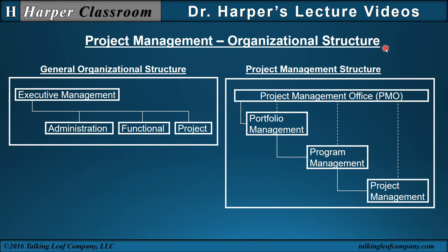The project management organizational structure is important to know how effective a project can be and how to conduct projects. The general organizational structure has executive management, administration, functional areas or line managers, and then projects. In the project management structure, you can have a project management office — the PMO — portfolio management, program management underneath the portfolio, and then project management underneath the program. A number of projects could define a program, and a number of programs could define a portfolio, all coordinated within the PMO.